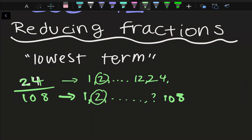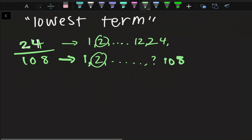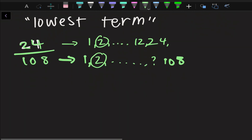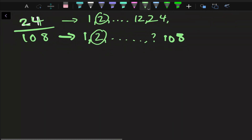How do we get it into lowest terms? I found that they both can be divided by 2, so I'm going to divide them both by 2. That gives me 12 over 54.